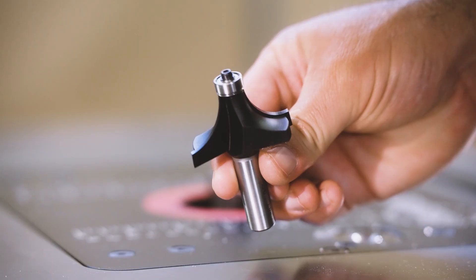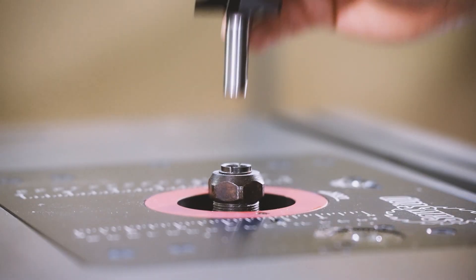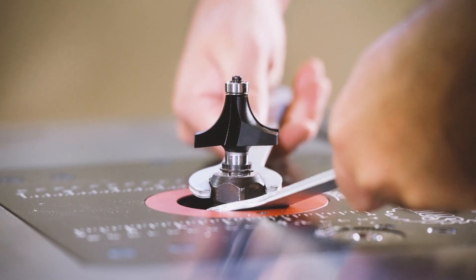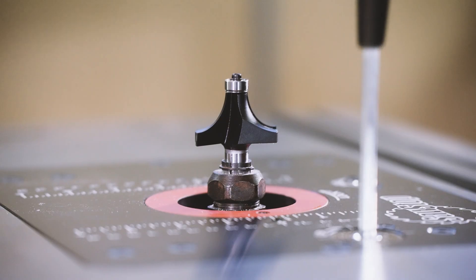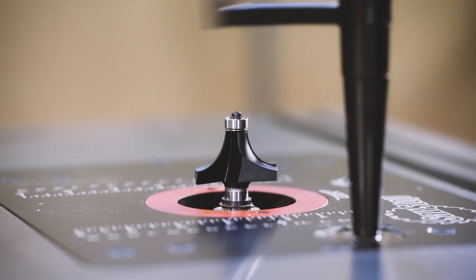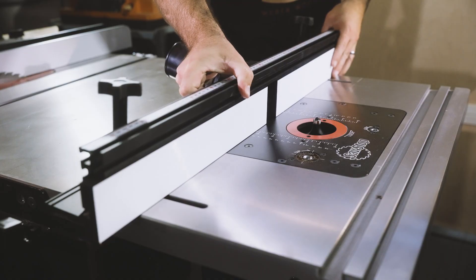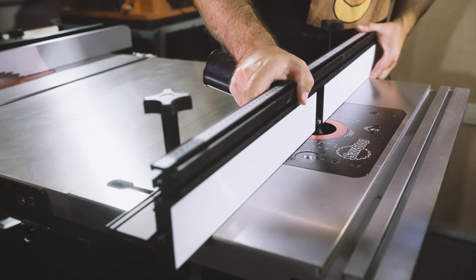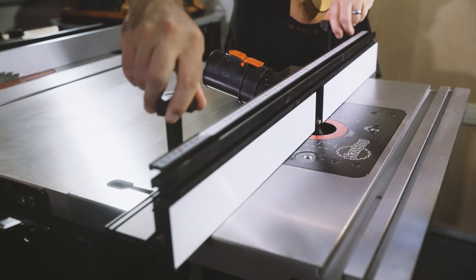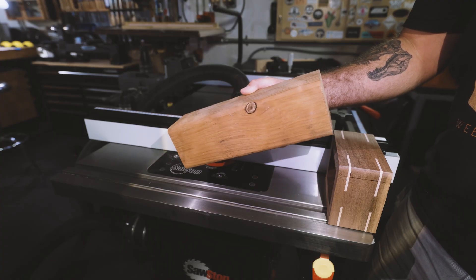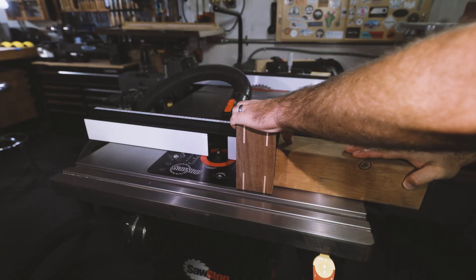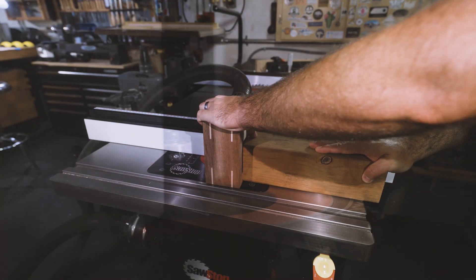I decided it would look nice to round over the sides of my box on my saw stop router table. This is another point in the project where you can really add your own unique variations. I'm going to use this scrap of 4x4 fence post as a large heavy push stick to make rounding over these corners safer.